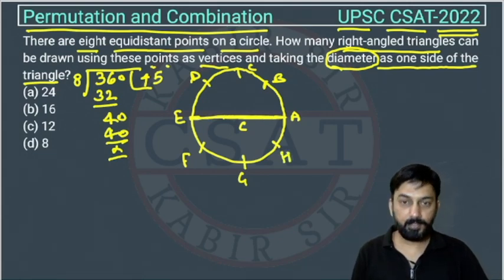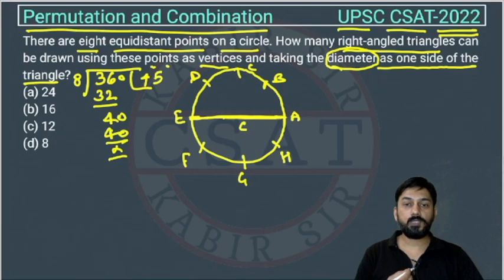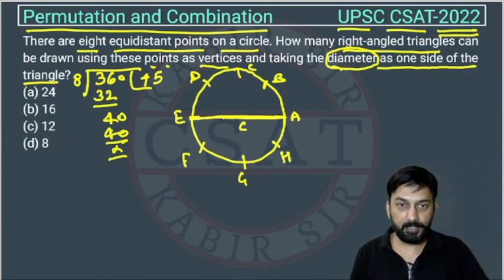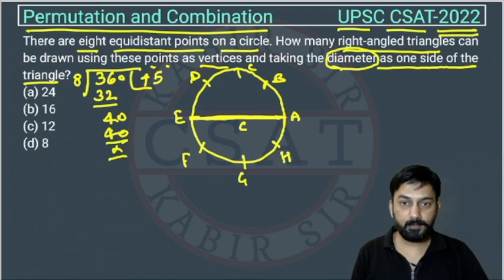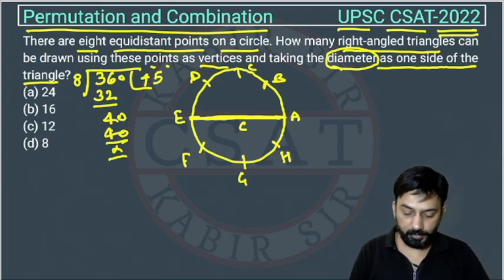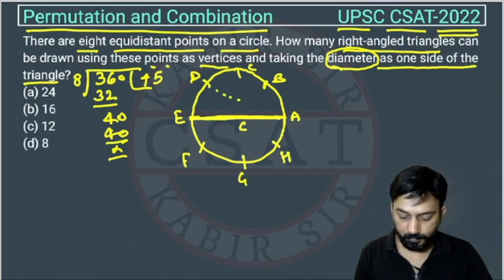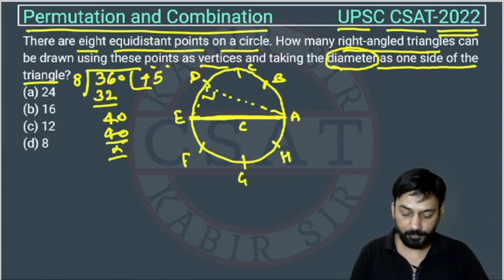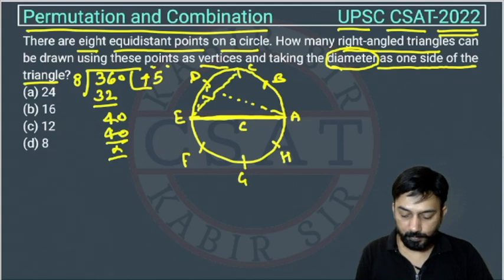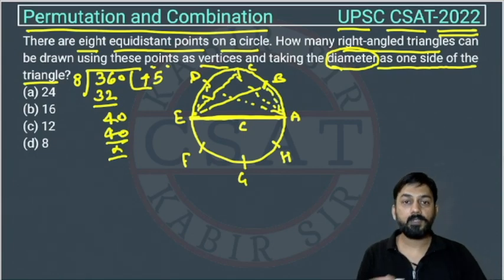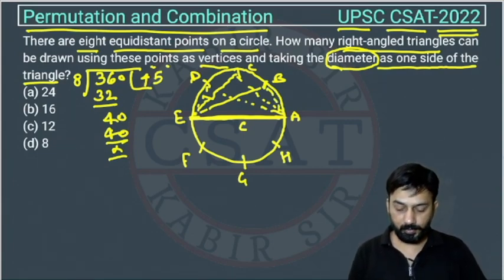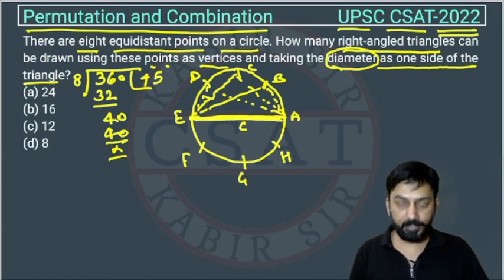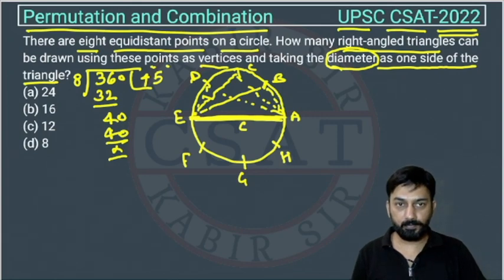Now, with the diameter EA, how many right angle triangles can we draw? This question uses one property of the circle: if we take the diameter as one side, then any angle drawn from any other point on the circle to that diameter will form a right angle triangle. So if you draw a triangle with this point, it will be a right angle triangle. Similarly with this point, and with this point — all right angle triangles. This is a property of the circle: if you use the diameter as one side, any triangle you draw will be a right angle triangle.